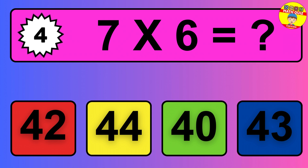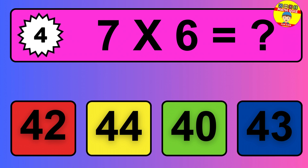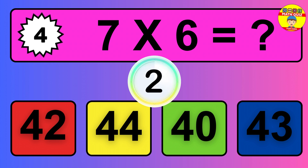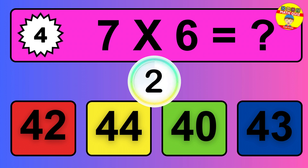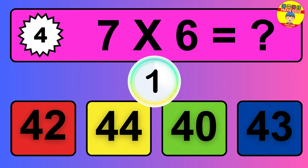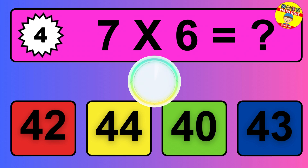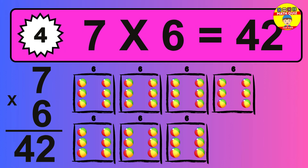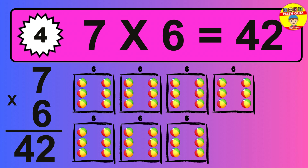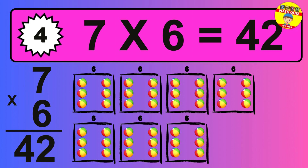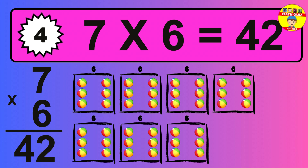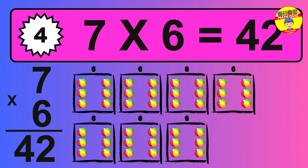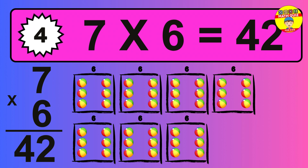Question 4. 7 times 6 equals what? So the answer is 7 times 6 is 42. To calculate, we have 7 groups with 6 balls each one. So how many balls do we have? 42 balls.